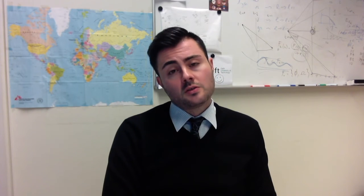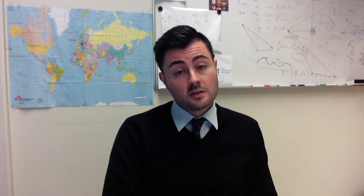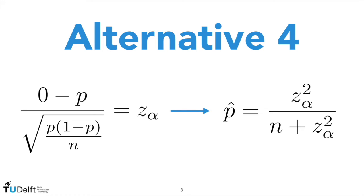Another possible estimator is the so-called confidence interval estimator, which relies on the basics of hypothesis testing. Given that we have observed zero defaults, we look for the largest p-hat we would fail to reject as an acceptable estimate of p. This is done by the usual z-standardization and solving for p, where z-alpha is the standard normal quantile associated with significance level alpha. The limitation of this method is that the standard normal approximation typically works for a product of n and p greater than or equal to 6, using a common rule of thumb. In low default portfolios, n is usually small, so the approximation may fail.